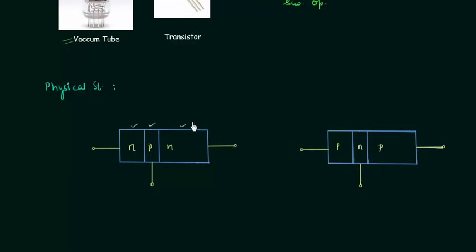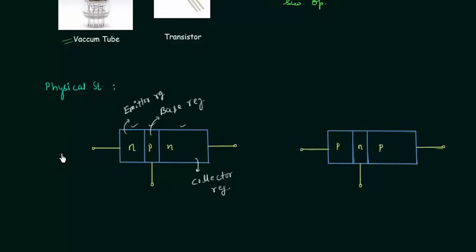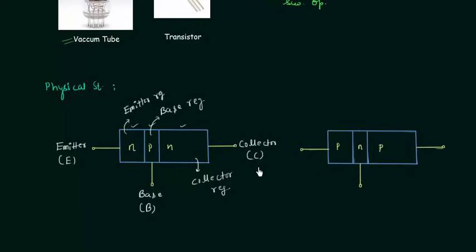There are three regions in a transistor. The largest region is called the collector region, the smallest region is called the base region, and the other region is called the emitter region. The terminal connected to the emitter region is called the emitter, represented by capital E. The terminal connected to the base region is called the base, represented by capital B. And this terminal is called the collector, represented by capital C.